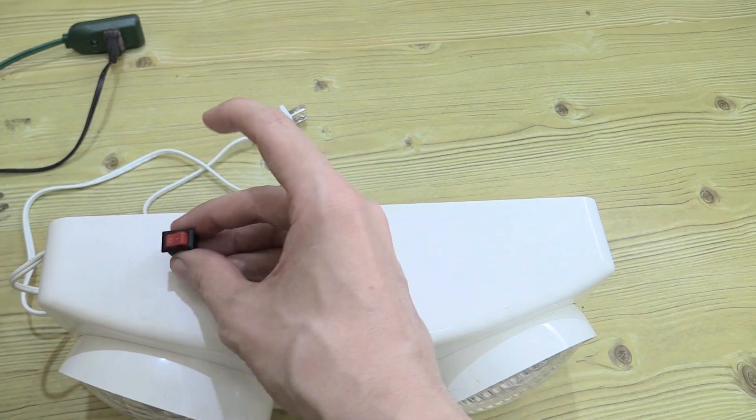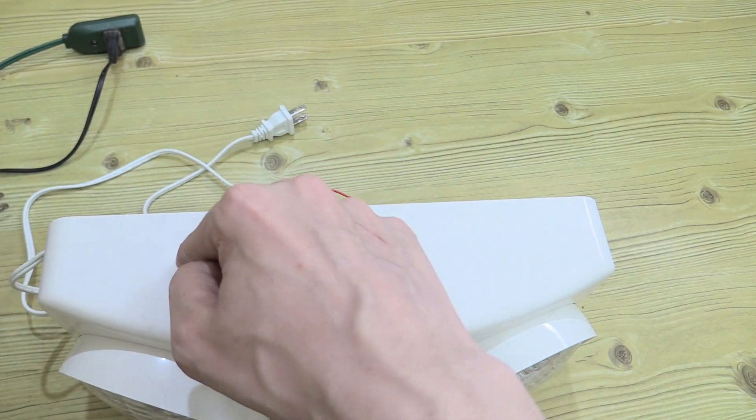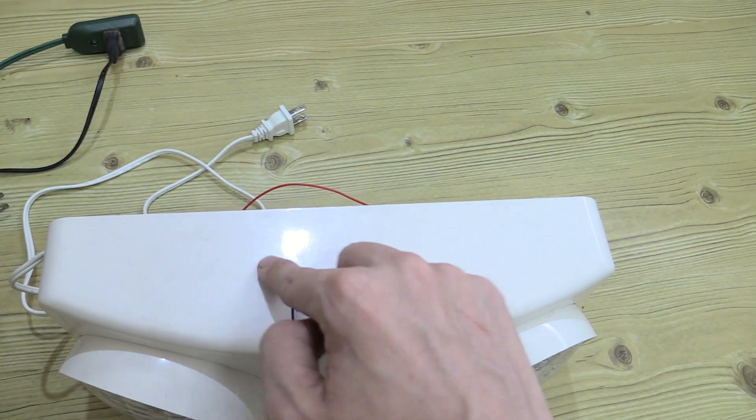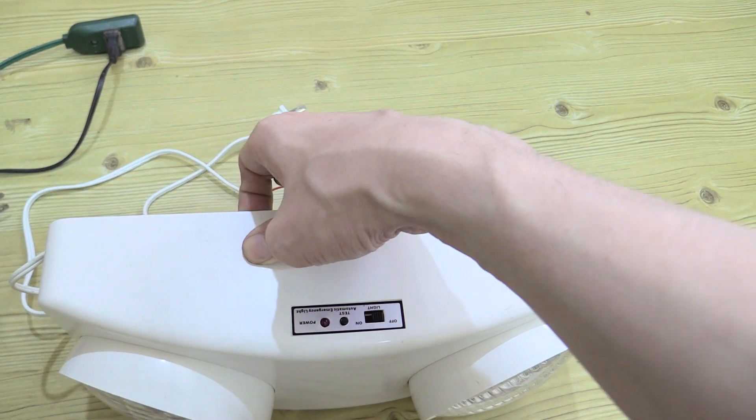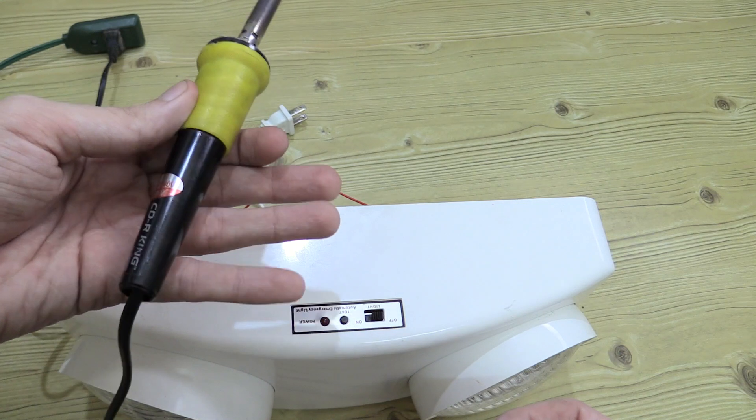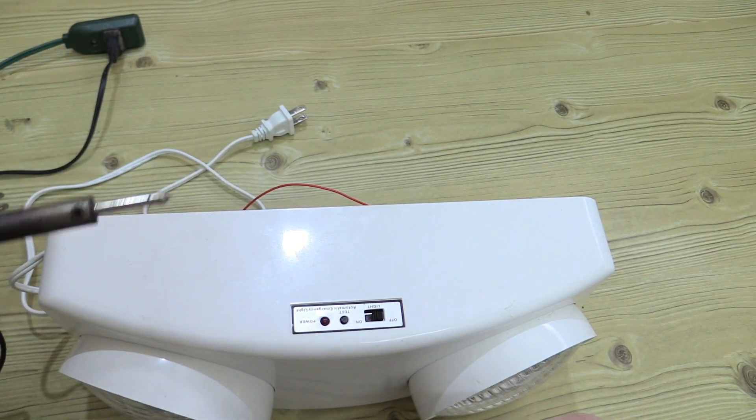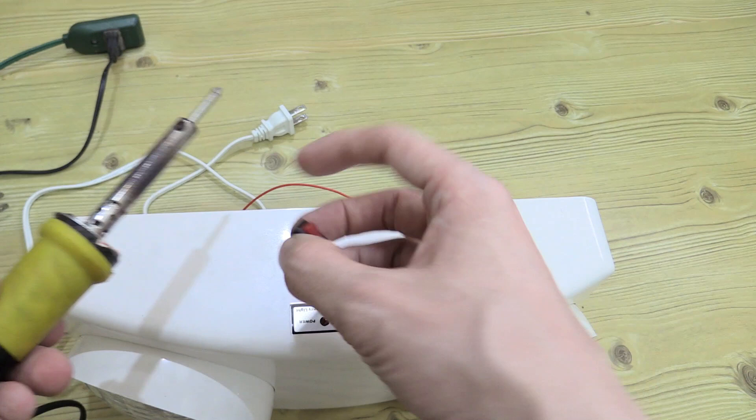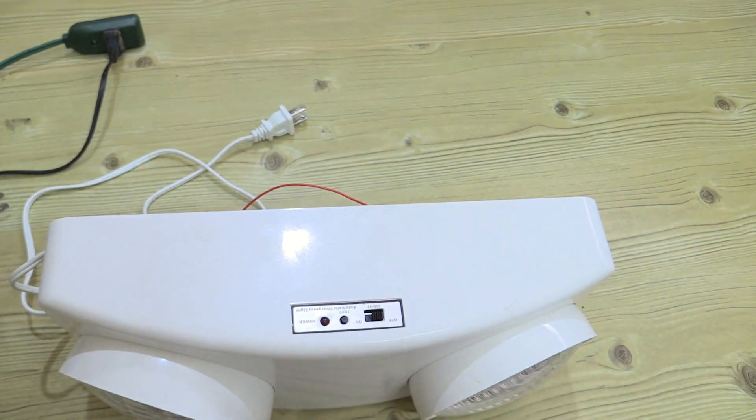So to make the hole in here for the switch, I thought about drilling it, but I'm not sure if this plastic would survive. It seems like the kind of plastic that might crack. So instead I'm going to use this old soldering iron from CD-R King. It was very cheap and I only really use it for melting through plastic. So this should let me create the hole I need to put my switch through.